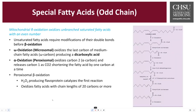Now let's talk about odd-chain fatty acids. Odd-chain fatty acids have an odd number of carbons and are processed a little differently. Unlike even-chain fatty acids, which produce acetyl-CoA, odd-chain fatty acids produce the byproduct propionyl-CoA, a close relative to acetyl-CoA. During beta-oxidation of odd-chain fatty acids, the final round produces a 3-carbon fragment known as propionyl-CoA, which cannot directly enter the citric acid cycle like acetyl-CoA. Instead, it is used as a substrate for gluconeogenesis, so it still provides some energy.